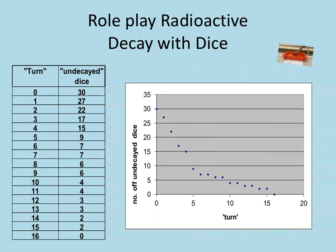I can now take that and plot them onto a graph. And although, because the dice rolling is a random process, I don't get the perfect shape, we can see that the rate at which they decay is rapid at the beginning and then it gets slower. That's because at the beginning I have a lot of dice that might roll a six, so I'm likely to get quite a lot that roll a six and decay. Whereas later on I have less dice left, which means there are less of them which might roll a six and decay. So the rate of decaying decreases.